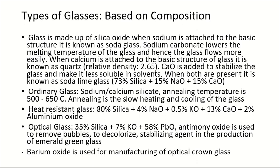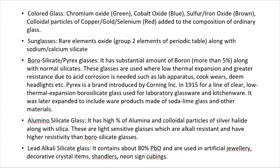With the addition of antimony oxide, it is used to produce emerald green glass. Barium oxide is used for the manufacturing of optical crown glass. For coloured glass: when chromium oxide is added to the ordinary glass structure, it produces green colour; cobalt oxide produces blue colour; sulphur or iron oxide forms brown coloured glass; and colloidal particles of copper, gold or selenium produce red coloured glass. Sunglasses are made up of rare element oxides along with the basic structure of sodium calcium silicate.